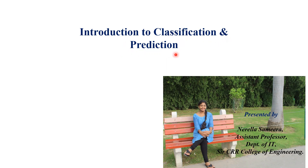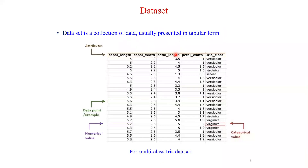To understand classification and prediction, we need to know about the data set. A data set is a collection of data, usually presented in tabular form. As you see here, the data set consists of rows and columns.